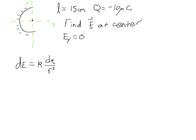Now, how about the x-component of the electric field? All of the negative charge is to the left of the center point. The electric field points in the direction of the force that would be experienced by a positive test charge at that point. So if I placed a positive test charge at the center of this semicircle, it would be attracted to the negative charge to the left. That means the x-component of the electric field is in the minus x direction. That takes care of the direction.